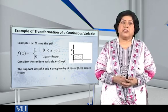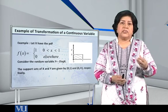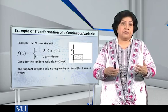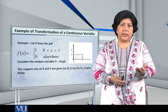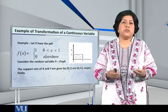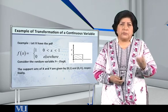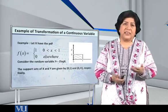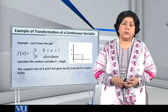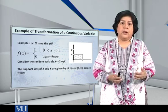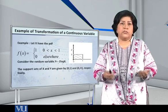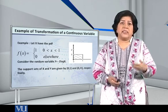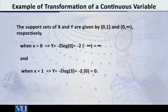The very first step, my dear students, is to consider what is going to be the support of the random variable y. The support of x is in front of us: 0 to 1. So, x is 0 to 1. That is very simple — when you put x = 0 in the equation y = -2 log(x), what do you get? You get -2 log(0).